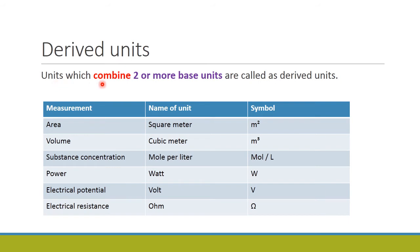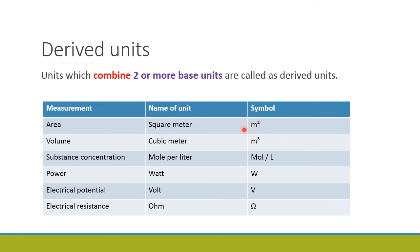Derived units are units which combine two or more base units. They are derived from base units by the combination of two or more base units. This is the second type of classification. Some derived units with their measurement and symbol: measurement area, unit is square meter, symbol m².